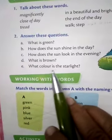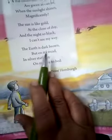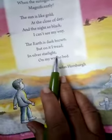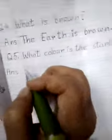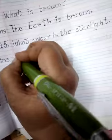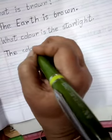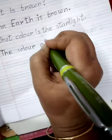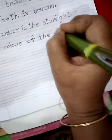Now the next question is: what color is the starlight? Now look here — silver starlight. So the answer is: the color of the starlight is silver.